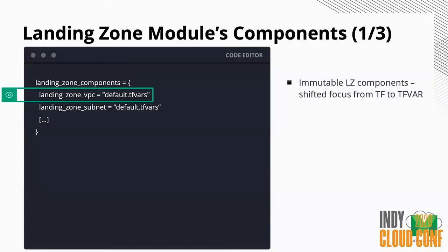One of the core tenants of the microservices architecture — it's fully self-service, fully independent, and it helps you to connect with other components as well. In a component, it's an immutable component, and we are shifting the focus from the Terraform configuration into the Terraform TFVars file. We want to help customers not to worry about how to write those components, but to worry about what you're passing as a variable into this component.